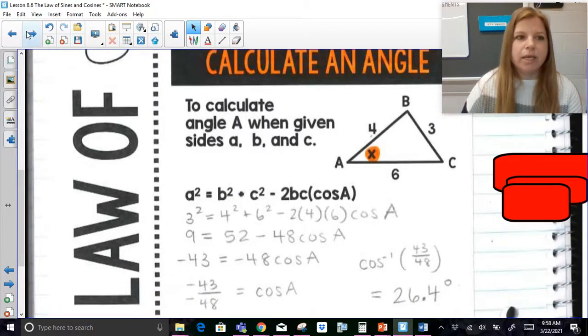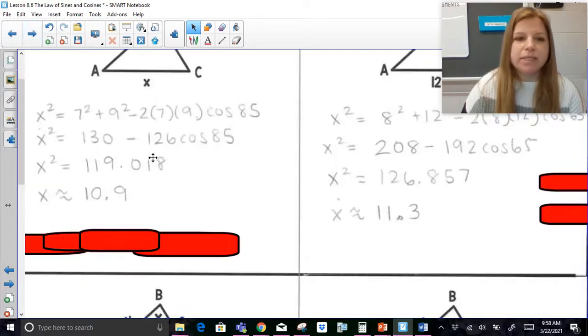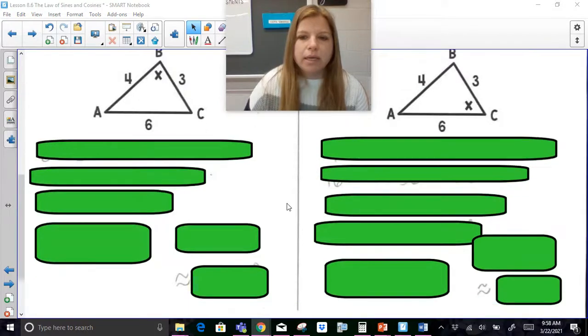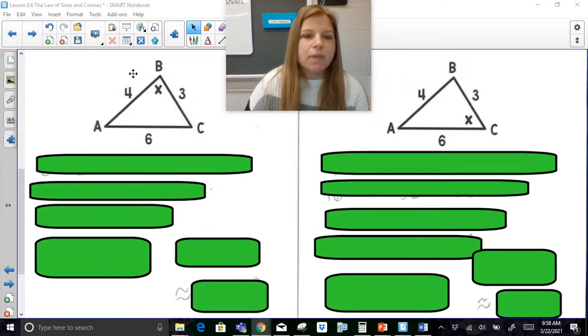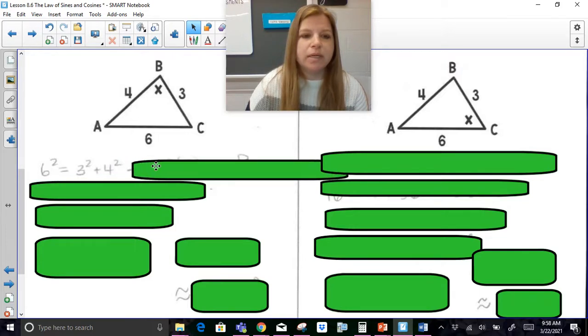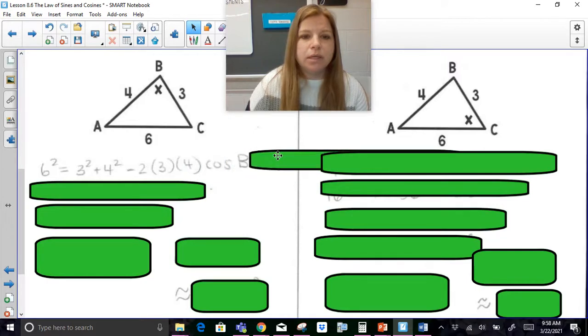Awesome. Let's do two practice problems of this skill. Finding a missing angle. So for this first one here, I'm solving for angle X, which is at B. I know the opposite side is 6. So I'm going to start this with 6 squared equals the sum of the squares of the other two sides. So 3 squared plus 4 squared minus 2 times 3 and 4. Cosine B, or I can call it X, whatever.